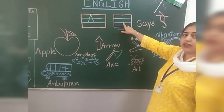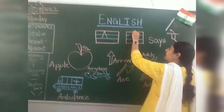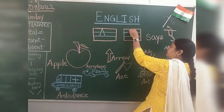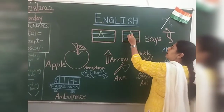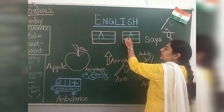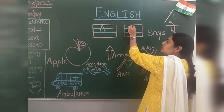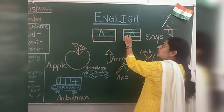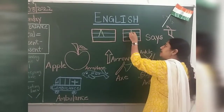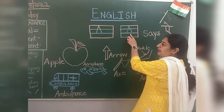Now I will show you how to write Alphabet A. You make a slanting line, again you make a slanting line, and then make a sleeping line. Parents, you have to make dots for children so they can practice. Slanting line, again slanting line, and then make sleeping line. This is Alphabet A.